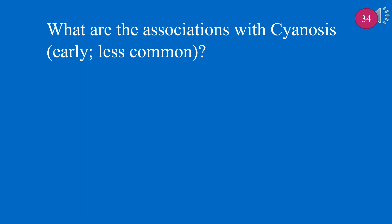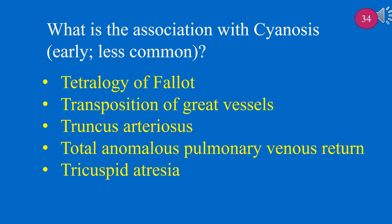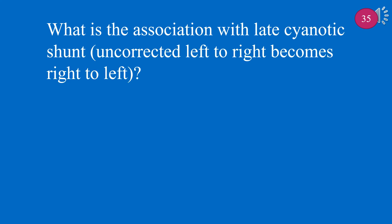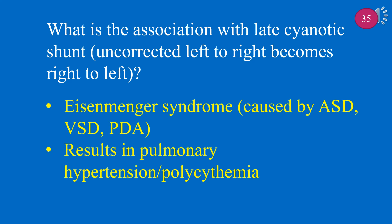What are the associations with cyanosis? Cyanosis is associated with tetralogy of Fallot, transposition of great vessels, truncus arteriosus, total anomalous pulmonary venous return, and tricuspid atresia. What is the association with late cyanotic shunt? If uncorrected, left-to-right becomes right-to-left — think of Eisenmenger syndrome, caused by ASD, VSD, PDA, and results in pulmonary hypertension or polycythemia.